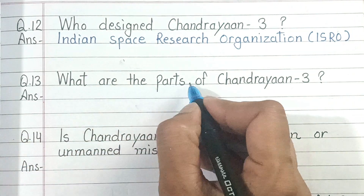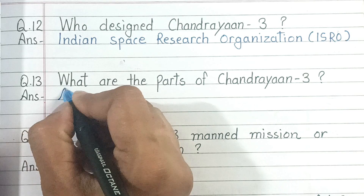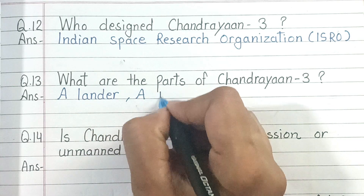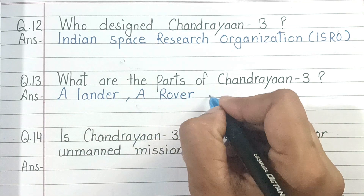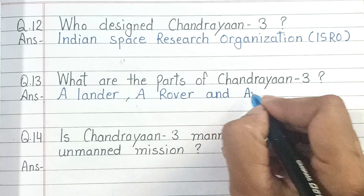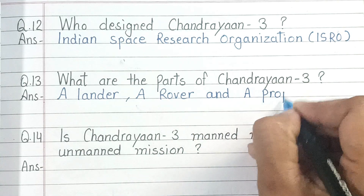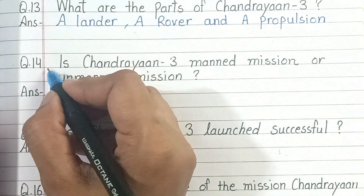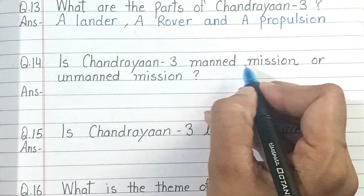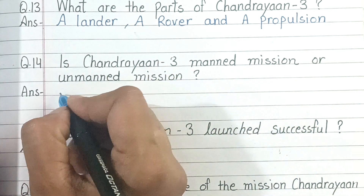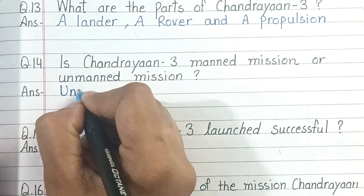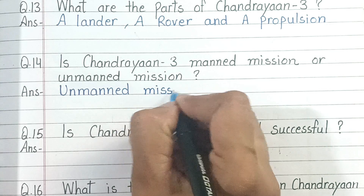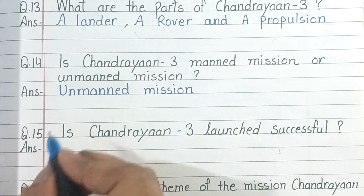Question number 13. What are the parts of Chandrayaan 3? And the answer is the lander, the rover, and the propulsion module. Question number 14. Is Chandrayaan 3 a manned mission or unmanned mission? And the answer is unmanned mission.